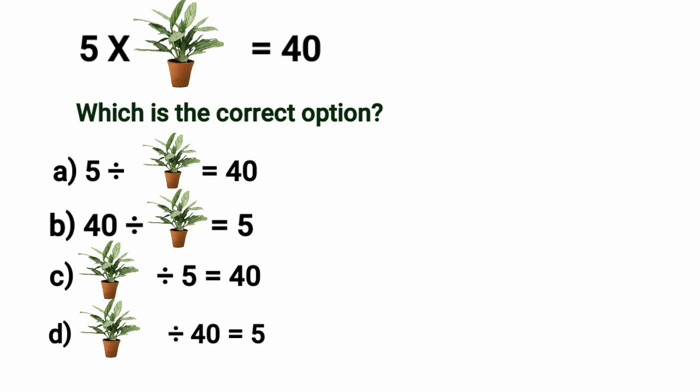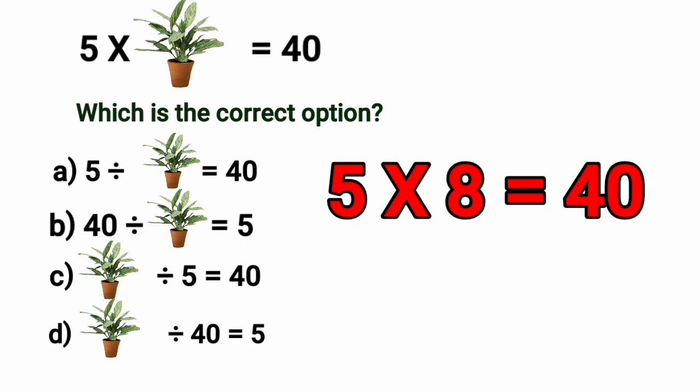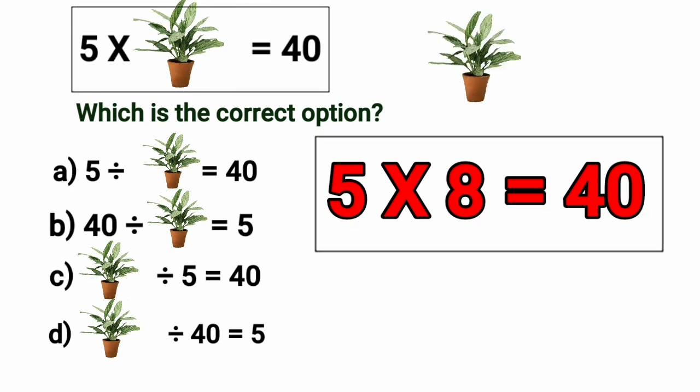Let us recall. When do we get 40 in 5's table? Yes, you are right. 5 8's are 40. So, plant is equal to 8.